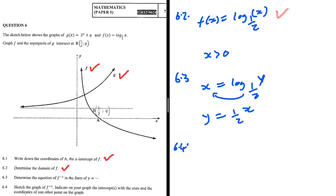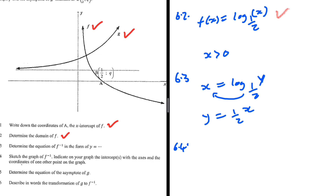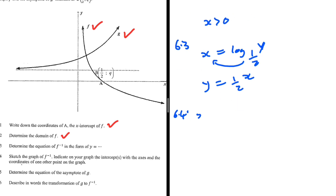6.4: sketch the graph of f inverse, indicating intercepts with the axes and coordinates of one other point. We need the intercepts. For the x-intercept, we let y equal 0, getting 0 equals one half to the power x. We know this is impossible — one half to the power of any number can never equal 0; it can get very close to 0 but never reaches it. So there is no x-intercept.